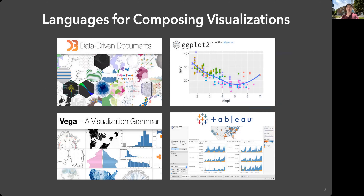There are many different tools or packages you can use to create visualizations. There's Tableau, which we covered, in the bottom right corner — something you can use without writing any code. Some of you using Python or Jupyter Notebook may have come across something called ggplot in the top right corner — that comes from the R statistical package. And in the top left corner is something called D3.